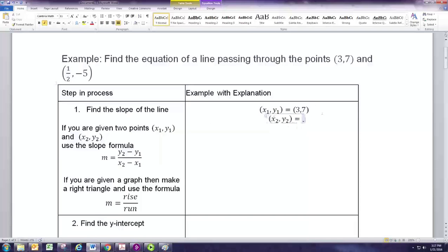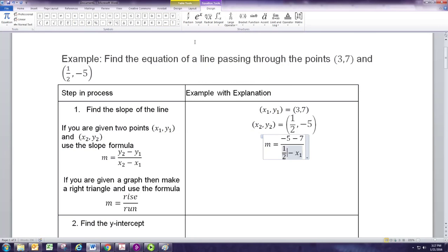x2, y2 would then be one-half, negative 5. So x2 is one-half and y2 is negative 5. Now you substitute into the formula. So y2 is negative 5, and y1 is 7, and x2 is one-half, and x1 is 3.